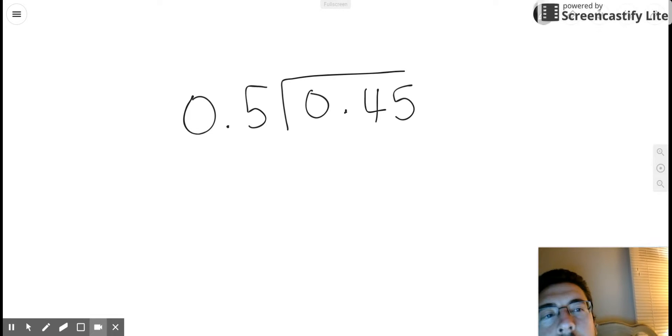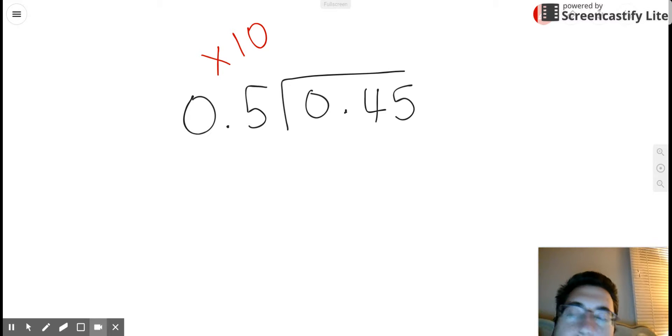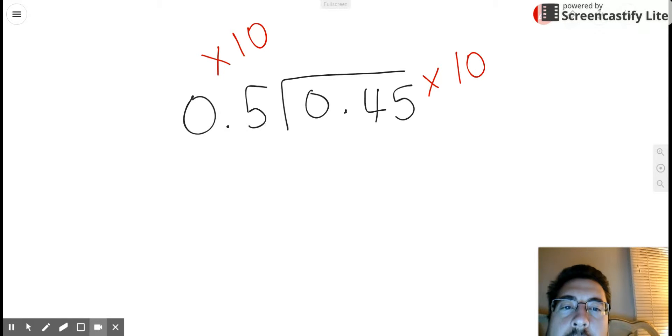We're going to multiply our 5 tenths by 10. If we multiply our divisor by 10, we need to multiply our dividend by 10 as well.